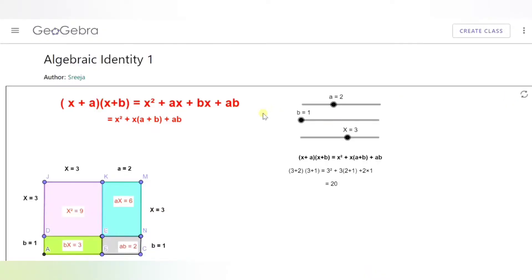I have already created an applet on GeoGebra for algebraic identity 1 which is (x + a)(x + b) = x² + (a + b)x + ab.